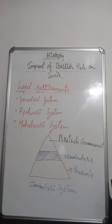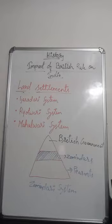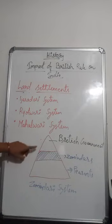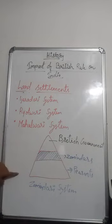Zamindari rights were made hereditary and revenue was fixed. Cultivators became mere tenants. Land was given to the highest bidder on a permanent basis. In the zamindari system, the hierarchy flows from the British government to zamindars to peasants.